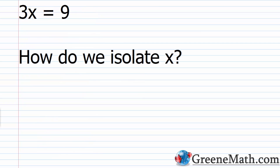Now suppose I give you something like 3x equals 9. How do we isolate x here? Our goal is still to isolate x. You'll notice that I don't have anything being added to x — now I have something multiplying x. So how do we isolate x in this case? We need to think about a few different properties first, and then we're going to revisit this problem.